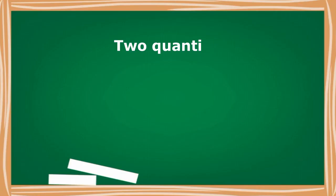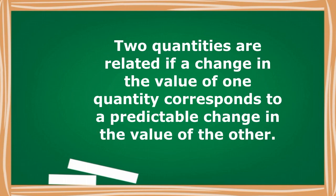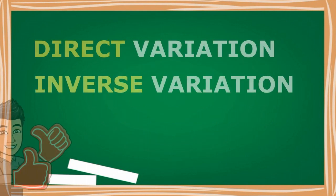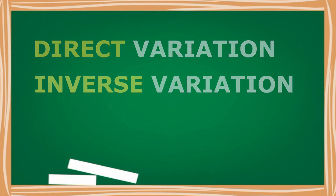It is said that the two quantities are related if a change in value of one quantity corresponds to a predictable change in the value of the other. Now, quantities can be related in two ways, directly or inversely. Let's see their differences.